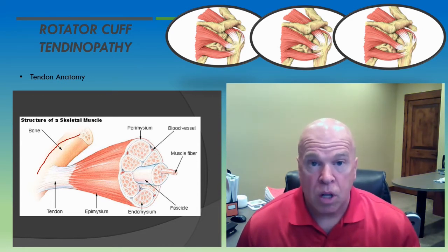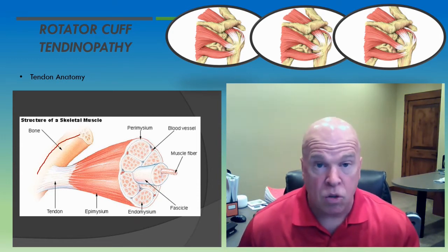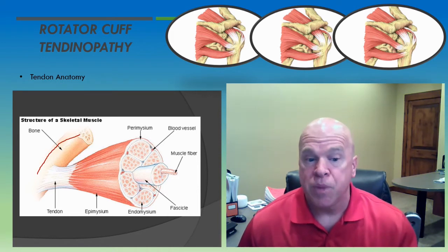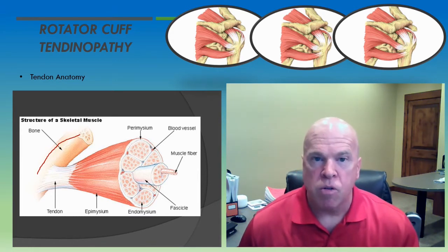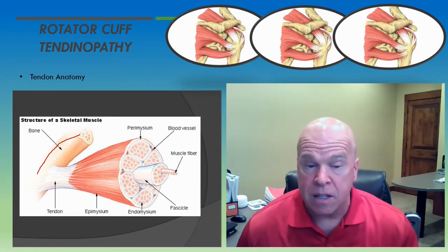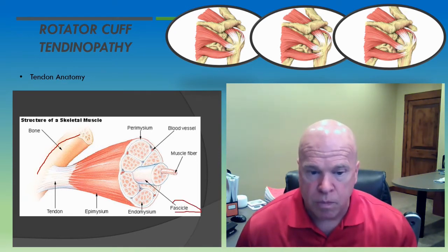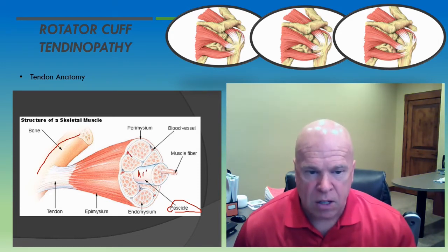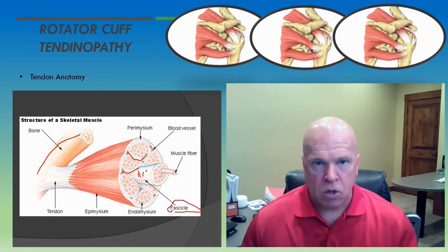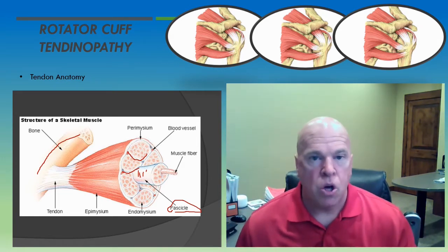All skeletal muscle of the body shares some common features regardless of where it is located. Here is a cross section of a whole muscle. We see that the whole muscle is divided into subgroups called fascicles. Here's a fascicle, here's another fascicle, and here's another one. These fascicles are individual bundles contained within the larger structure, which is the whole muscle. There are many, many fascicles contained within the whole muscle.